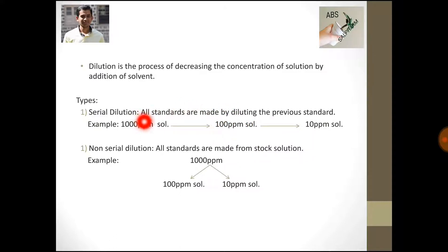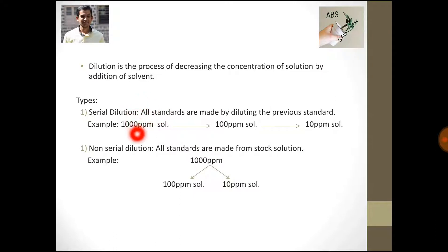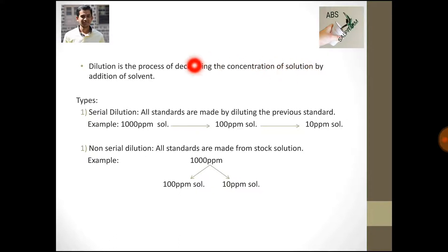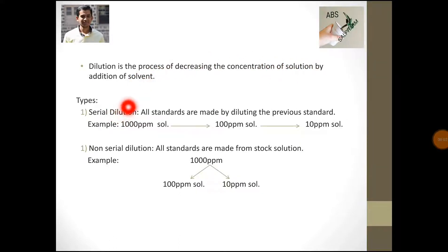It is possible only by addition of solvent to this solution. If I am adding solvent, I am going to decrease the concentration of the original solution. So dilution is the process of decreasing the concentration of a solution by addition of solvent.